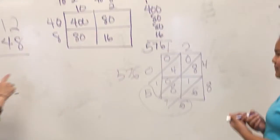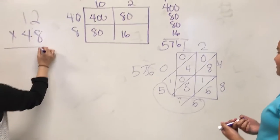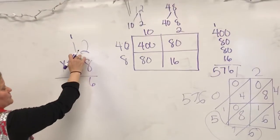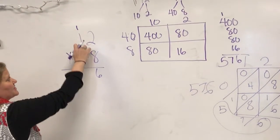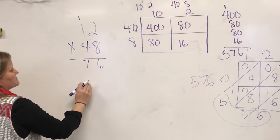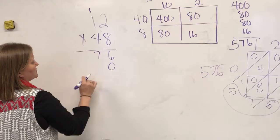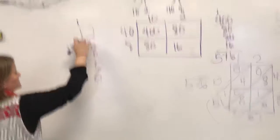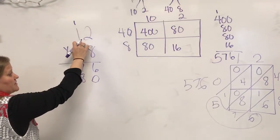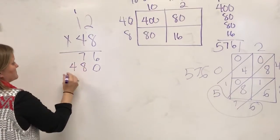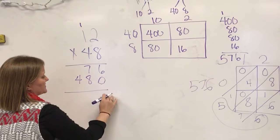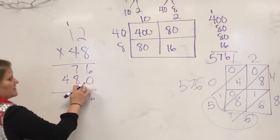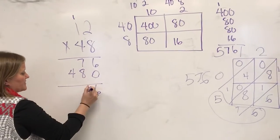Okay, and then let's do our algorithm. 8 times 2 is 16, carry my 1. 8 times 1 is 8, plus 1 is 7. I'm going to put my placeholder. 4 times 2 is 8, 4 times 1 is 4. 6 plus 0 is 6. 7 plus 8 is 15. Carry my—oh, let's do this again.